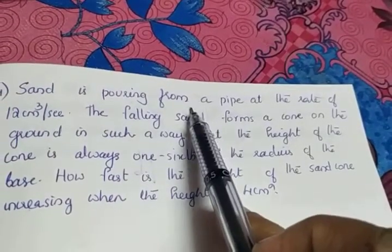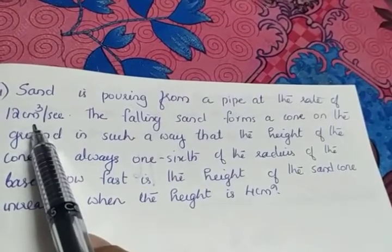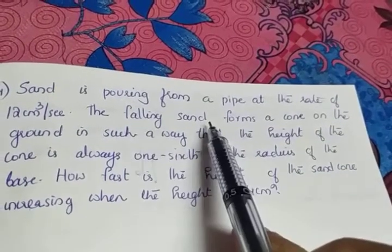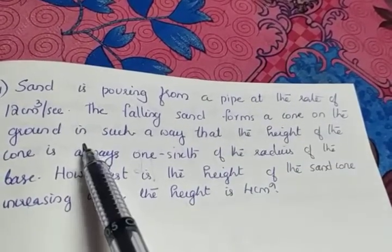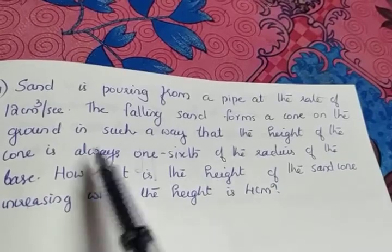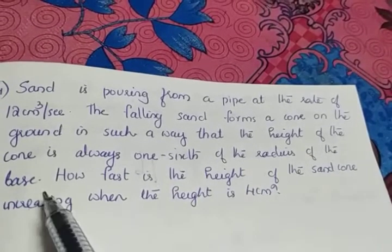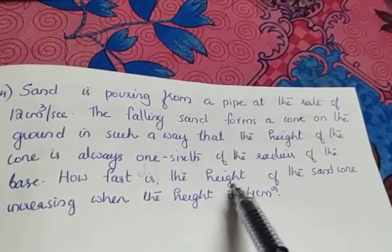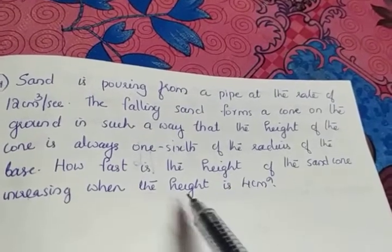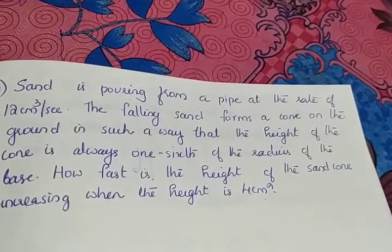Sand is pouring from a pipe at the rate of 12 cm³ per second. The falling sand forms a cone on the ground in such a way that the height of the cone is always 1/6th of the radius of the base. How fast is the height of the sand cone increasing when the height is 4 cm?